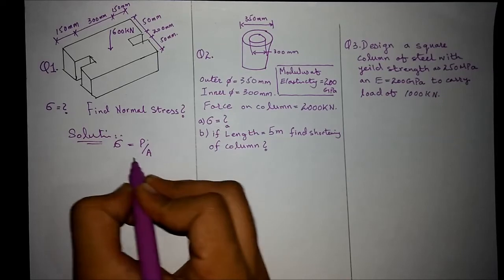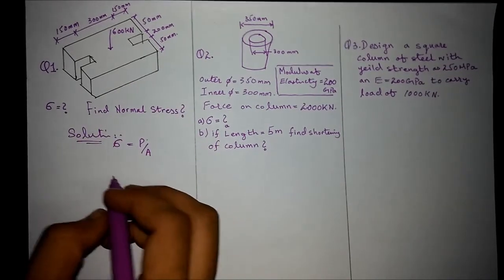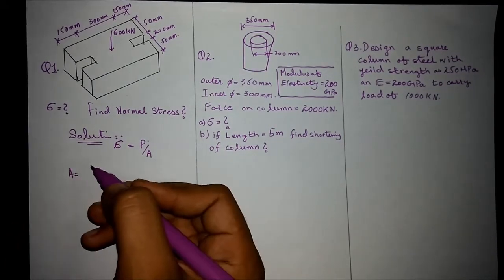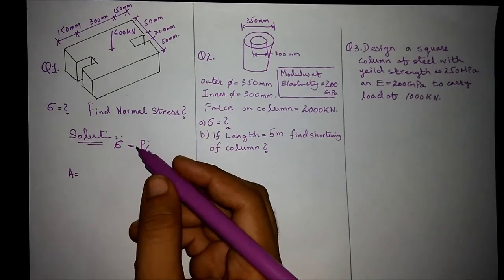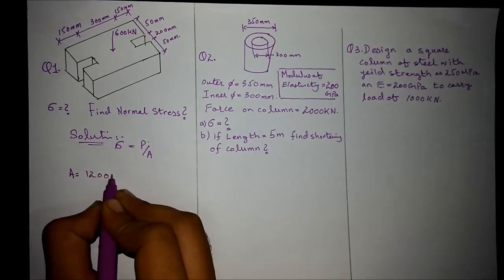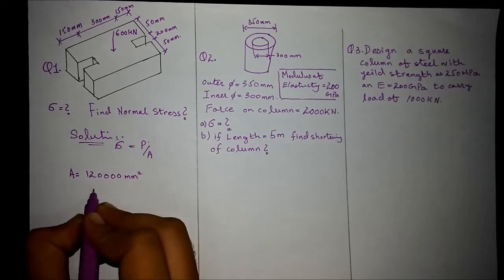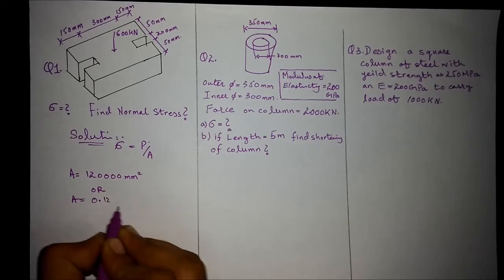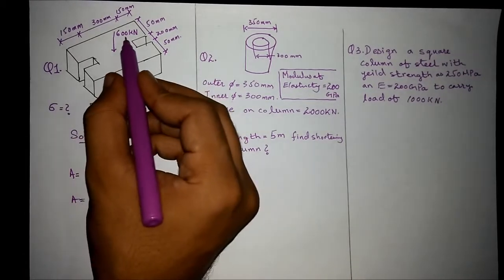We know that stress equals force upon area. We have been given the force and we have to find out the area with the help of the dimensions. Calculating the area for the given member, the area comes out to be millimeter square or meter square, while the force we are given is in kilonewtons.